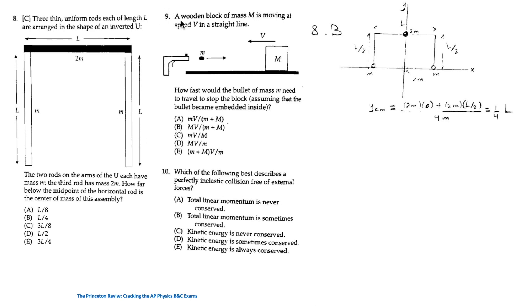For question 9, a wooden block of mass M is moving at a speed V in a straight line. How fast would the bullet of mass M need to travel to stop the block assuming that the bullet became embedded inside? If we apply the law of conservation of momentum immediately before and immediately after the collision, we get this equation. The final velocity is zero because the block stops and the bullet is embedded within it. So M1 V1 initial is equal to minus M2 V2 initial. MV is equal to minus minus V because this is in the opposite direction which gives MV. And so V is equal to M over M times V which is D.